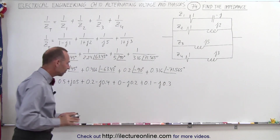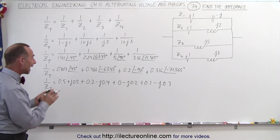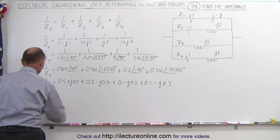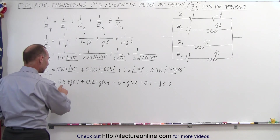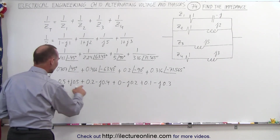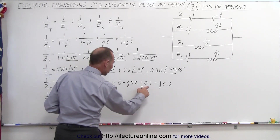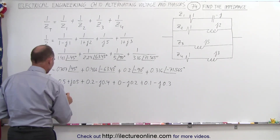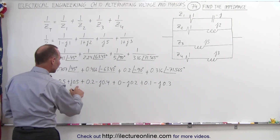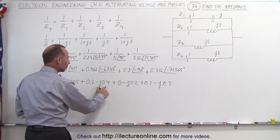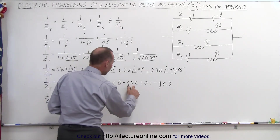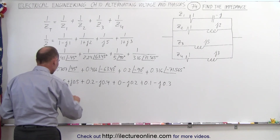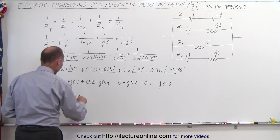Now we have nice round numbers that we can easily add together. So 1 over Z total equals: adding the real parts — 0.5 plus 0.2 plus 0 plus 0.1 — we get 0.8. For the imaginary part: 0.5 minus 0.4 minus 0.2 minus 0.3, which gives minus J0.4.